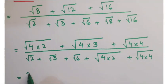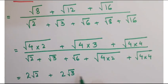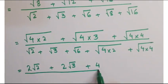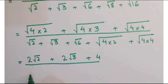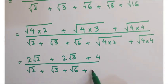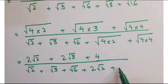You can write it as (2√2 + 2√3 + 4) upon (√2 + √3 + √6 + 2√2 + 4).